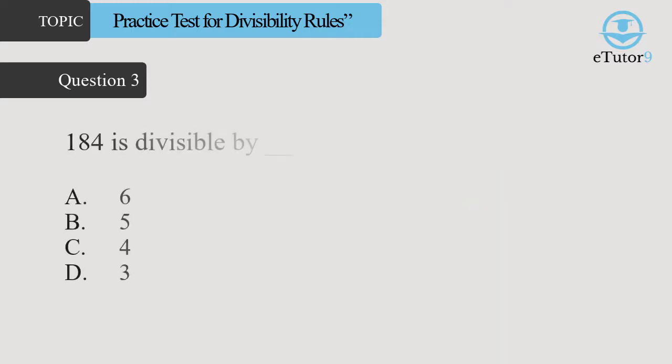Question 3: 184 is divisible by dash. Answer is C, 4.